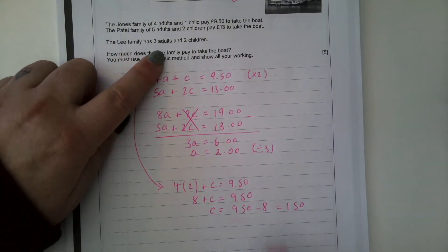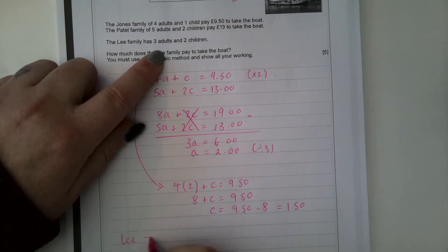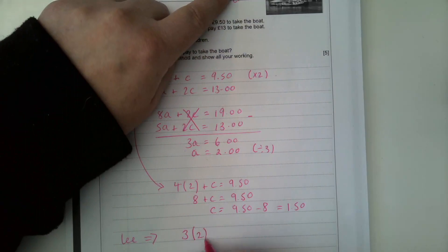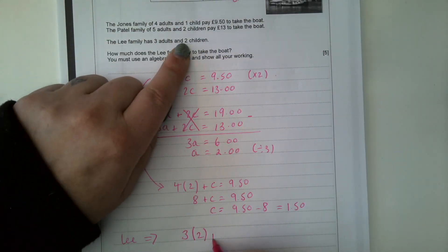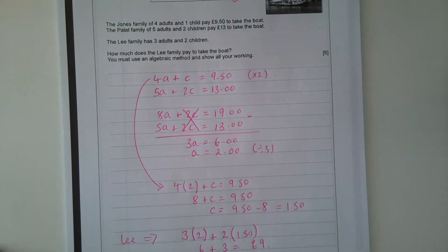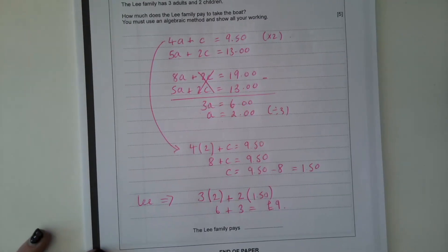So the Lee family has 3 adults. So 3 times that £2 that we've worked out. And they have 2 children, so 2 times £1.50, which is 6 plus 3. So it's going to cost them £9. So the Lee family pays £9.